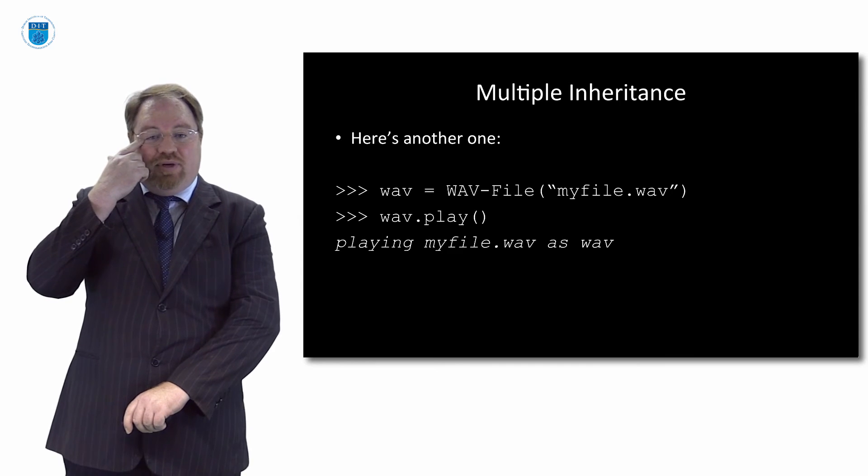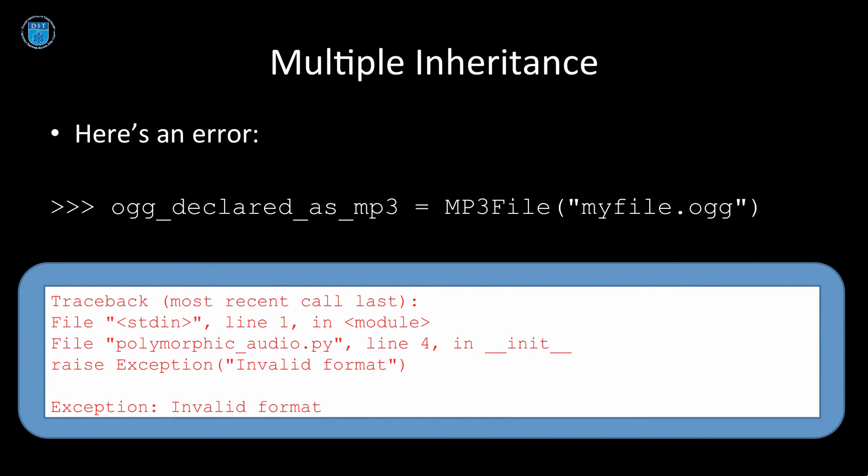Let's look at an error one now. If I have an .ogg file, myfile.ogg, but I declare it as MP3 file, and then I try and run that. What it'll say is the extension on the file is MP3, but you're trying to play it. I thought it was an MP3, but the filename you've put in is an .ogg. So that causes the init to raise an exception and cause it to crash.